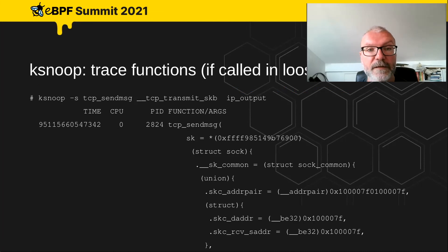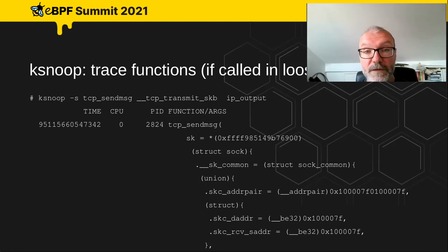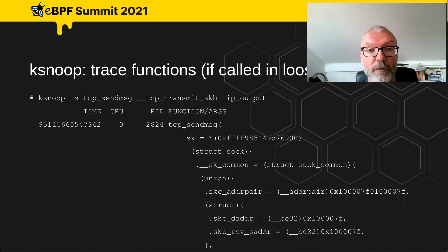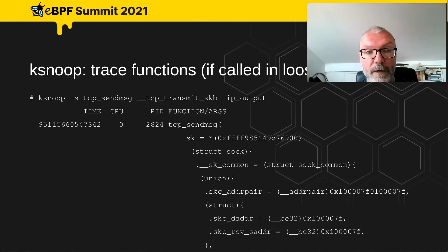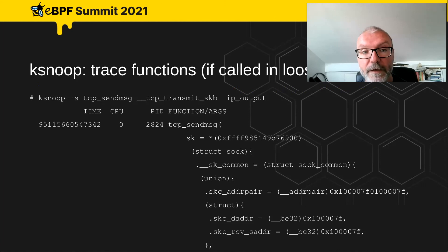You can also specify a set of functions that you want to see, but only if they're called loosely in a specific order. For example, if a call to tcp_send_message ends up calling tcp_transmit_skb either directly or indirectly, which in turn calls ip_output, you can see the output for all of those. This is useful when you have a stack signature for a particular failure and want to examine the arguments or return values associated with that failure.